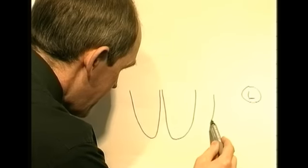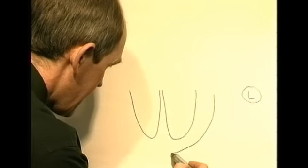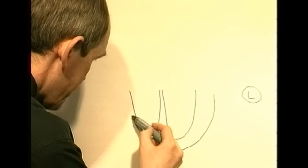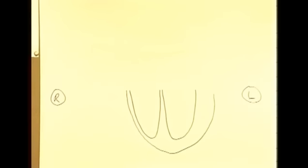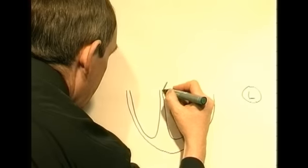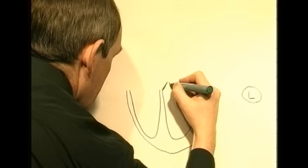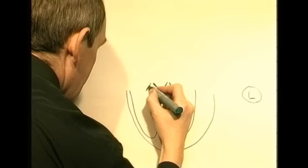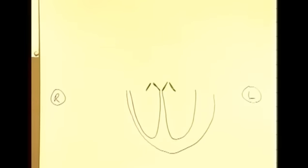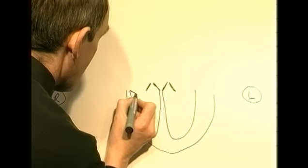Now this represents the wall of the left ventricle, which is quite thick. And the wall of the right ventricle is thinner — I'm deliberately drawing this as a thinner wall. Now the heart contains valves. There are some valves in the middle pointing up this way, and some on the other side pointing down the way.